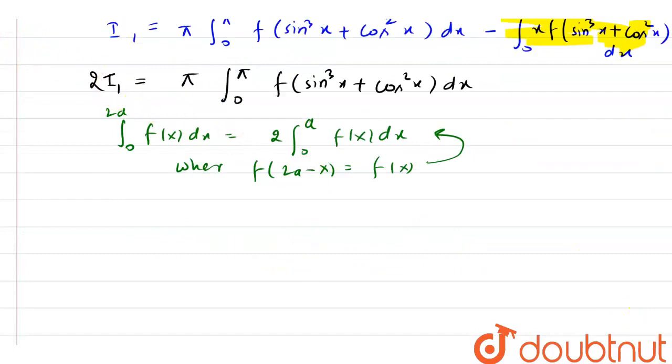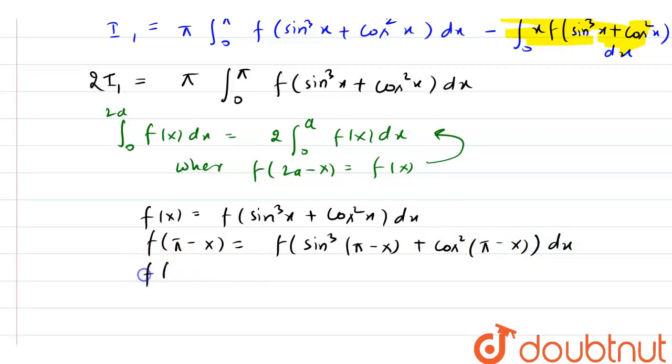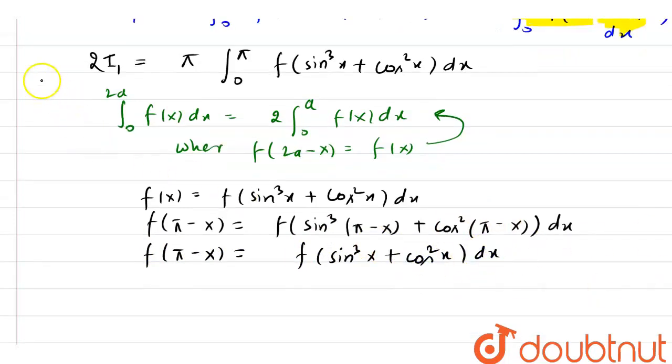So here we have in i1, fx as f of sin cube x plus cos square x. Now if I find f of pi minus x, then we have sin cube pi minus x plus cos square pi minus x. As you can see, f of pi minus x equals f of x.